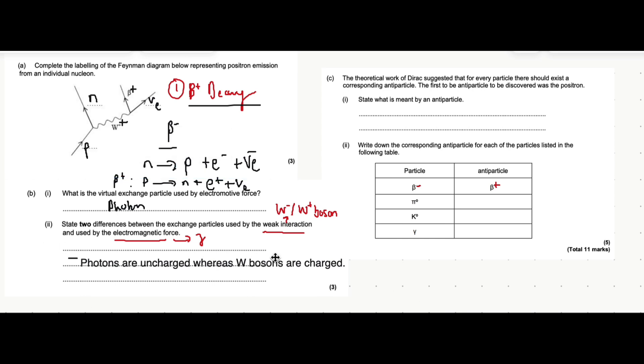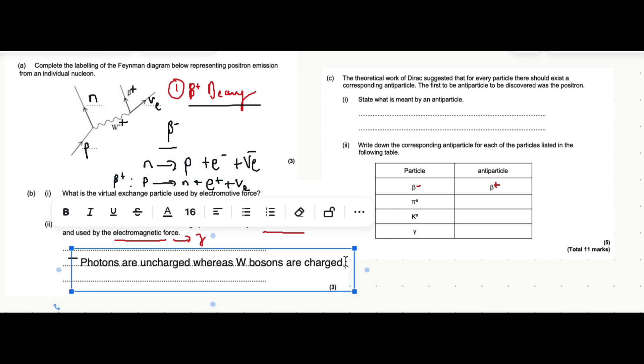Just thinking of another one, you can also say that photons don't have any mass, whereas W bosons do have mass. So photons are massless, whereas W bosons have mass.